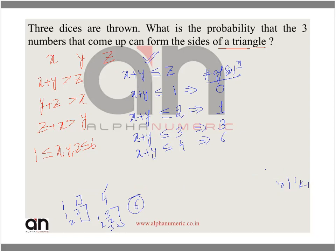Continuing, if x plus y is less than or equal to 5 — that is z equals 5 — the total number of solutions is the sum of the first 4 natural numbers, which is 4 times 5 divided by 2, equal to 10. And if x plus y is less than or equal to 6 — z equals 6 — the sum of the first 5 natural numbers gives 15 solutions.